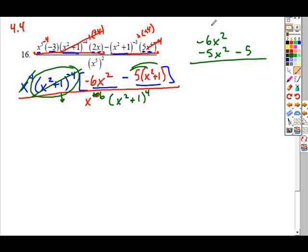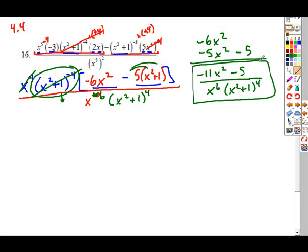And so when you simplify this completely, you wind up with your numerator of negative 11x squared minus 5, all over x to the 6th, x squared plus 1 to the 4th. There were no factors that got canceled from our denominator, so you don't need to worry about any of the domain restrictions.